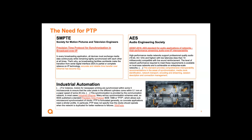In industrial automation, a newspaper printing machine requires the whole system to be synchronized within five microseconds to ensure that all color pixels in the different cylinders print in the right place and hit the paper at the right time. This synchronization is extremely necessary for the printing to be successful and not smeared.